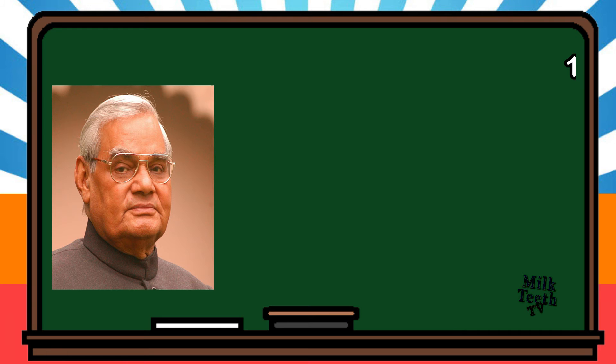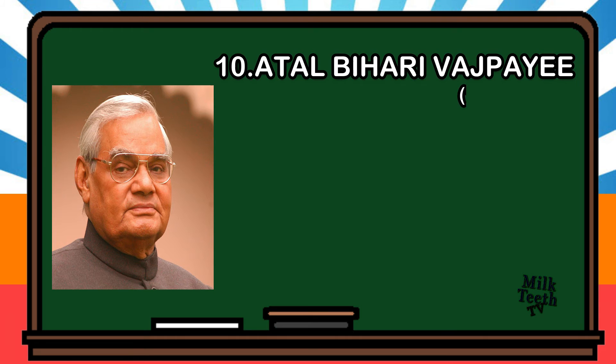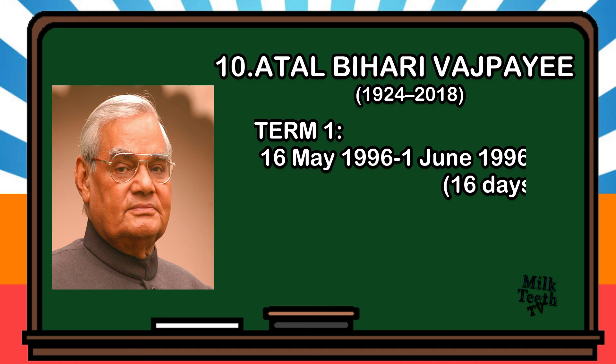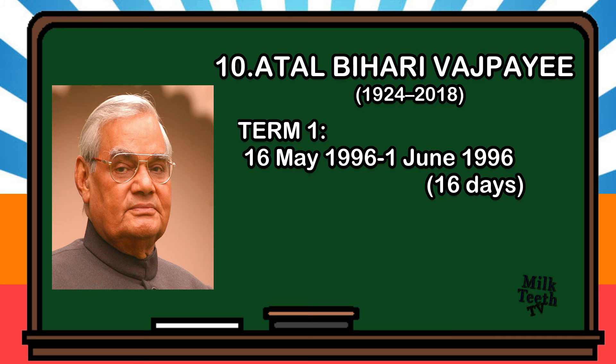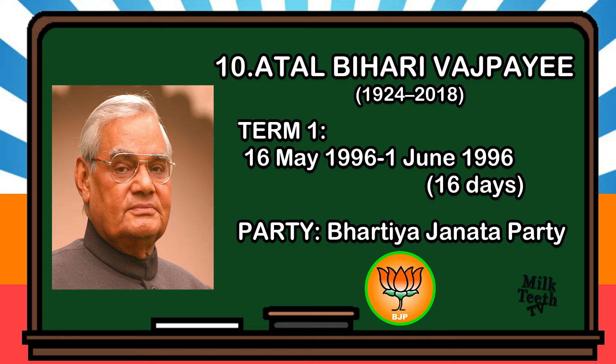The tenth Prime Minister of India was Atal Bihari Vajpayee. He is the only Indian statesman to have served three times as Prime Minister. For the first time, his tenure began on 16th May 1996 and lasted to 1st June 1996, for a period of 16 days. Party: Bharatiya Janata Party.